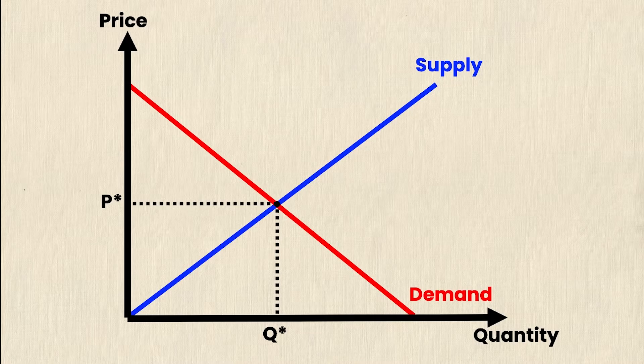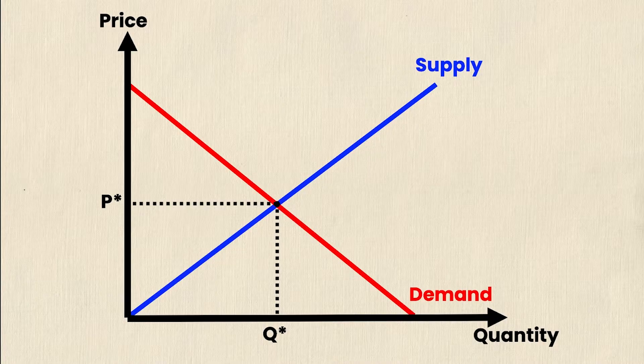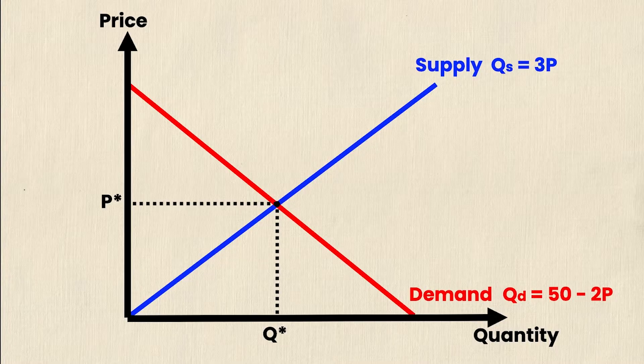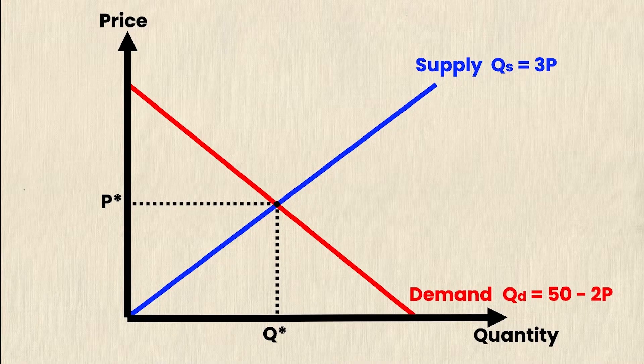So unlike part one, in this video we'll be looking at real values. So we need our supply and demand equations. And they are as follows. The supply equation is quantity supplied is equal to 3P. And the demand equation is quantity demanded is equal to 50 minus 2P.